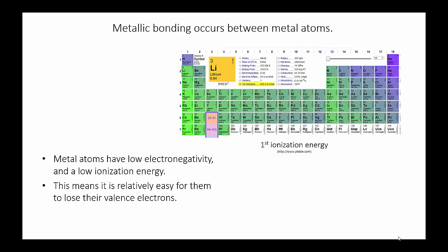Metallic bonding occurs between metal atoms. The valence electrons of a metal atom have a low ionization energy, and the atom itself has low electronegativity. This means that the valence electrons are not strongly tied to their parent atom, and this leads us to a model of metallic bonding called the Electron Sea model.